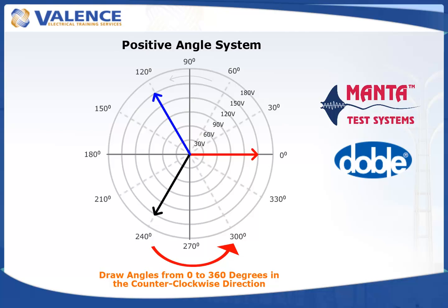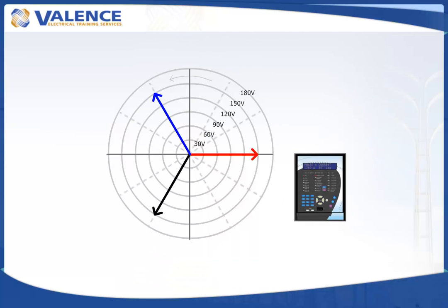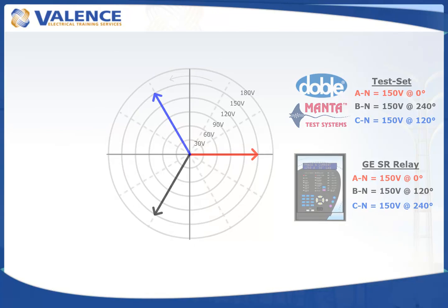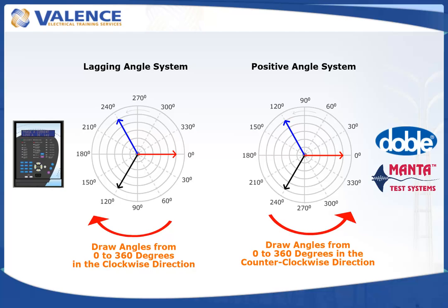If you generated the following voltages in a GE SR relay with a DOBLE test set, your test set would report these angles, but your relay would report these angles. It looks like you're generating ABC rotation from your test set, but the relay is receiving ACB or vice versa depending on your background. If you look at the correct angle system used by each device, you can see that the phasors don't move, it's the angles that are relabeled in each device.